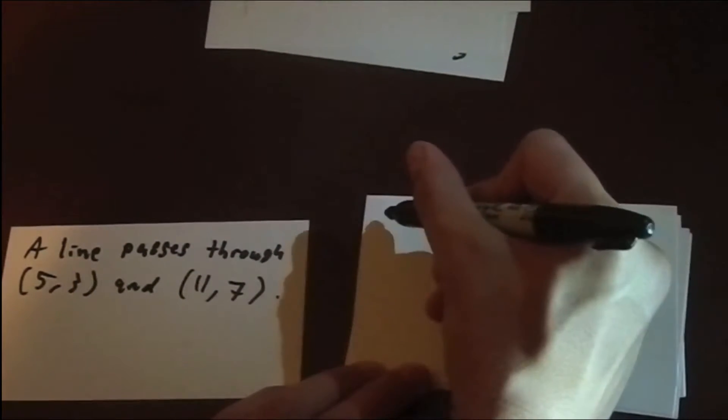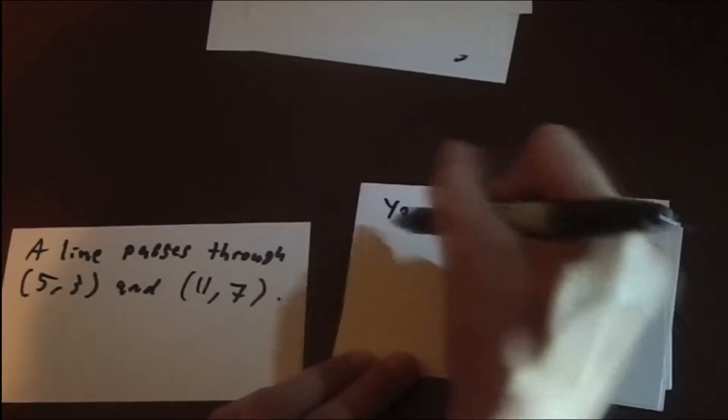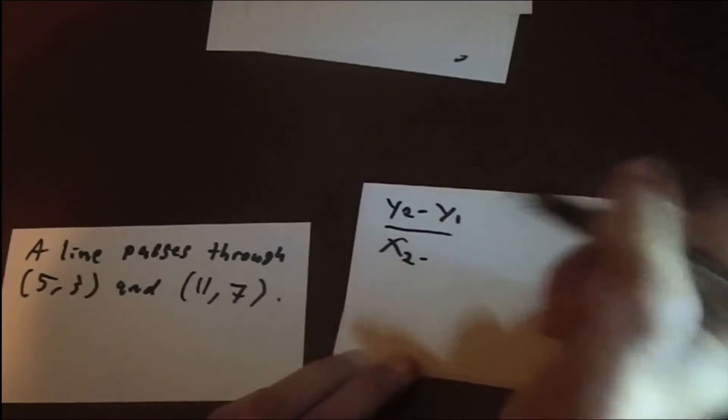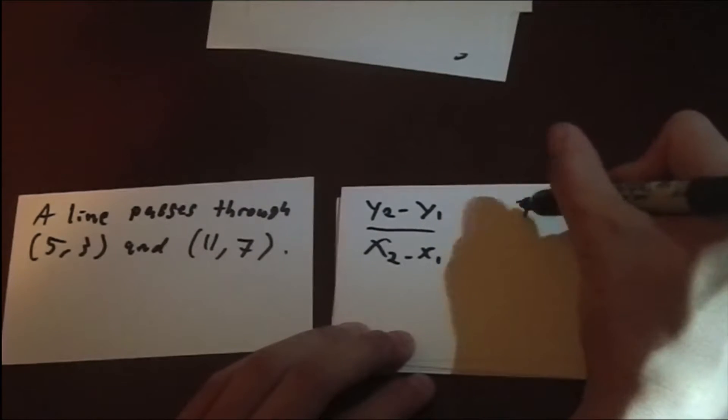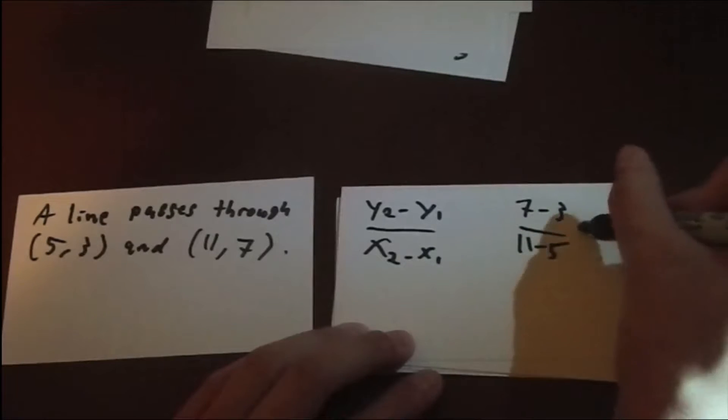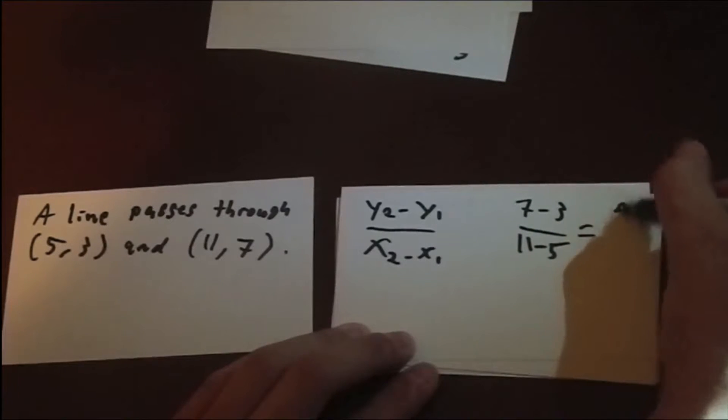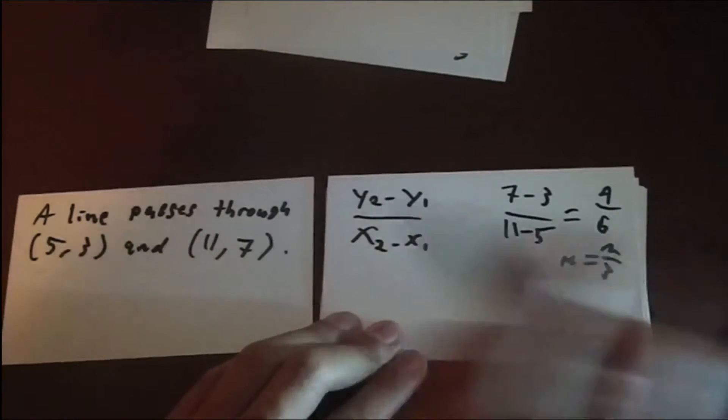The slope equation, as you may have seen in another video, is y2 minus y1 over x2 minus x1. So, we're going to plug it in. 7 minus 3 over 11 minus 5. And that'll give us 4 over 6, or 2 thirds. And we can set m equal to that.